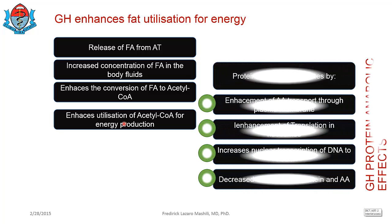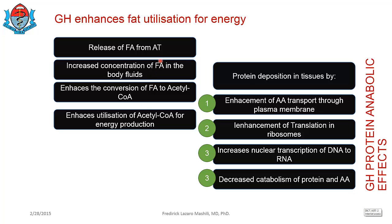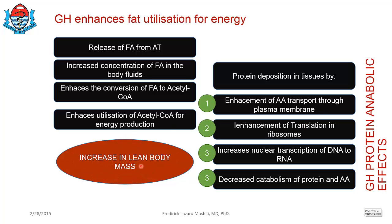Growth hormone facilitates fat burning within the body. If you combine the two effects — the fat burning effect and the protein building effect of growth hormone — basically what growth hormone is doing is increasing lean body mass. Because you are burning fat but building muscle. At the same time, you are also building bones. So the net effect of growth hormone is an increase in lean body mass.